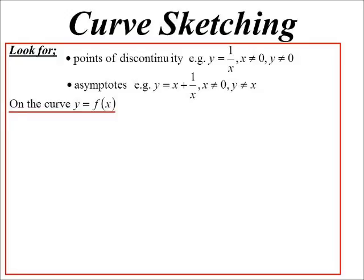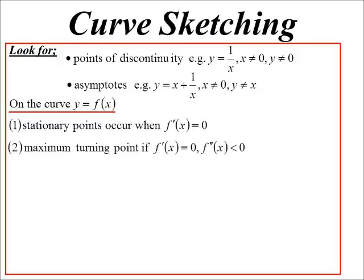Now, on the actual curve itself, we now know stationary points, they occur when the first derivative is equal to zero. Once we locate those stationary points, we can classify them. Maximum ones will be when the second derivative is less than zero, curves concave down. Minimum ones will be when it's greater than zero, curves concave up.